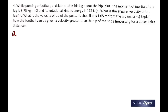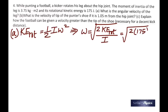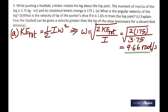While punting a football, a kicker rotates his leg about the hip joint. The moment of inertia of the leg is 3.75 kg·m² and its rotational kinetic energy is 175 joules. What is the angular velocity of the leg? KE_rotation = ½Iω². Rearranging: ω = √(2 × 175 / 3.75) = 9.66 rad/s.